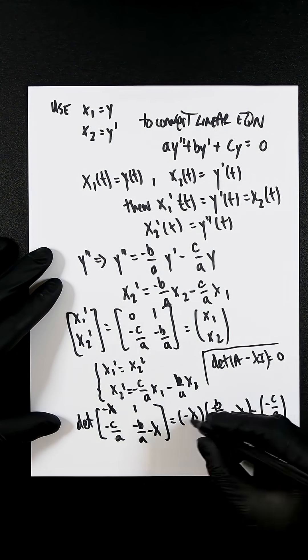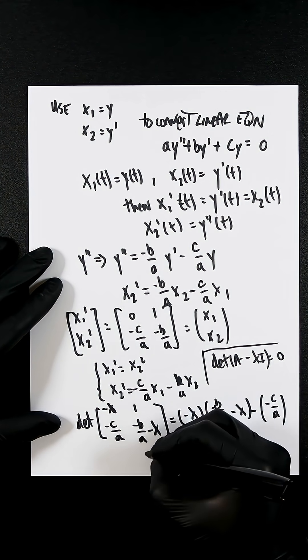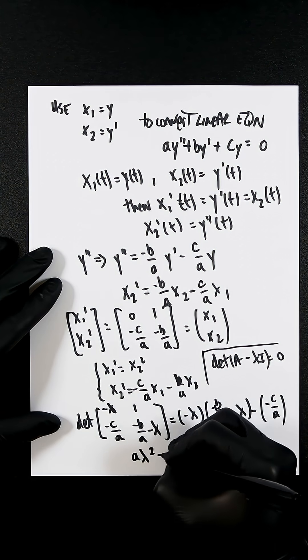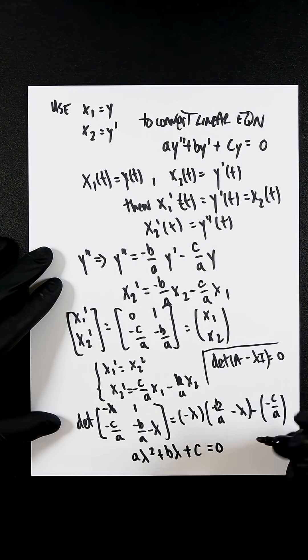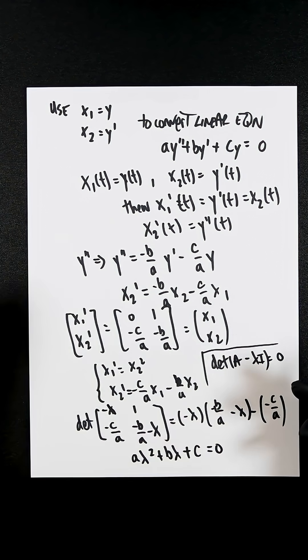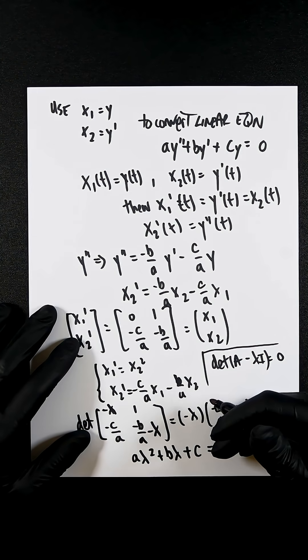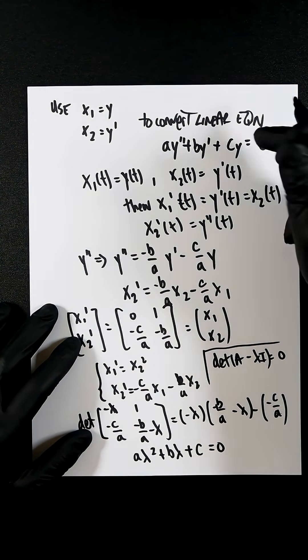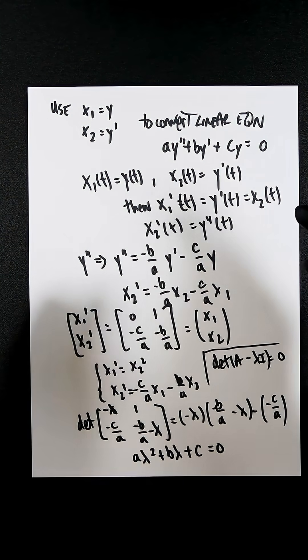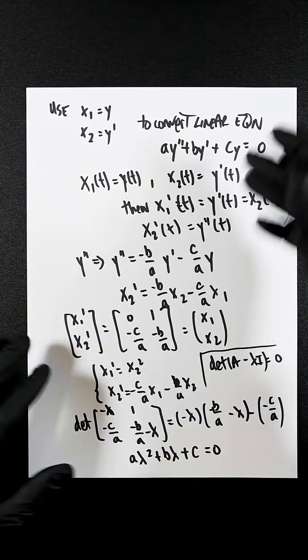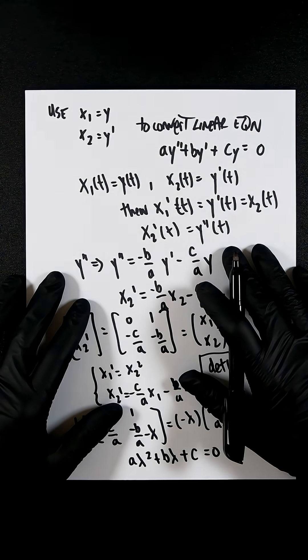So that then broken out is a lambda squared plus b lambda plus c equals 0, which this characteristic equation of the system is exactly the same as the original second order differential equation here. So we know they're the same. This is a solution in that and we did it. We did it.